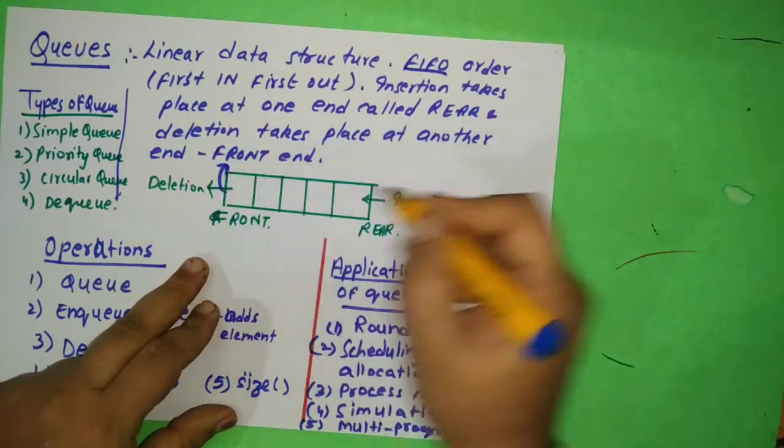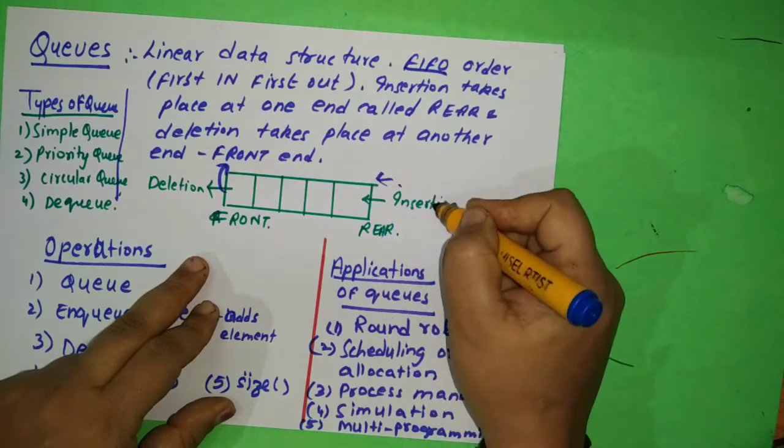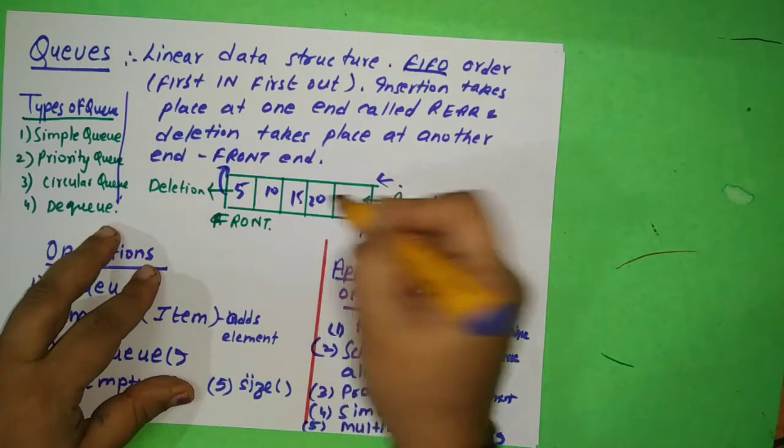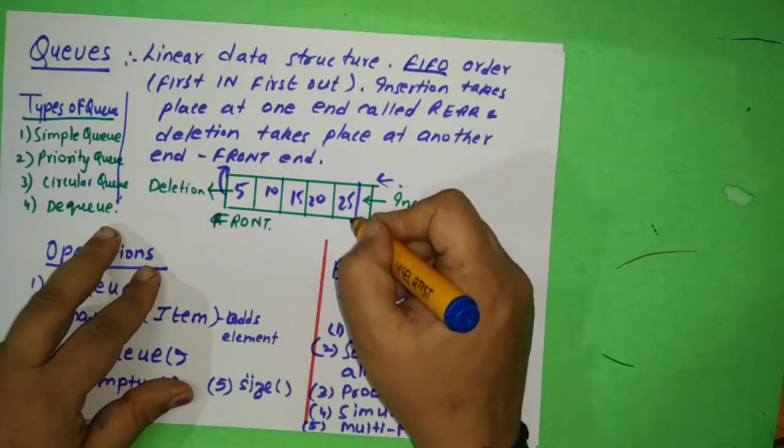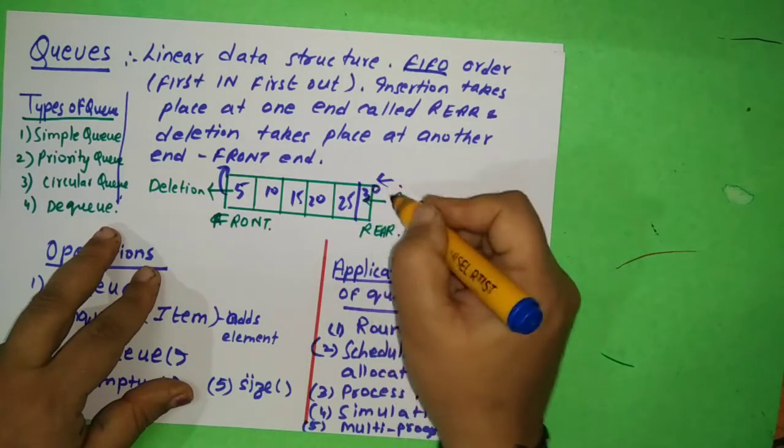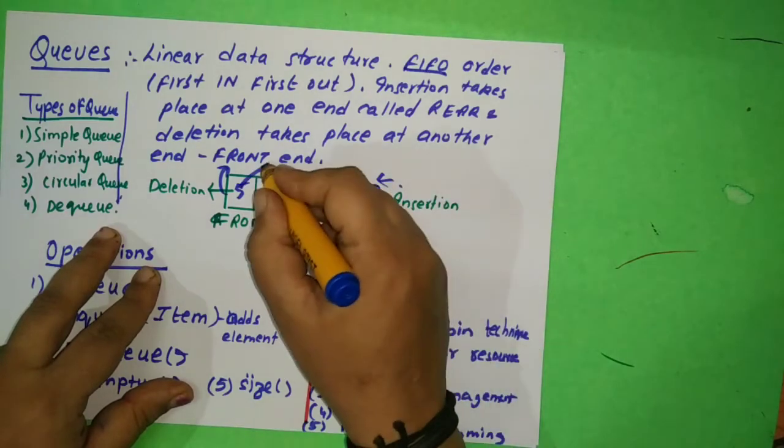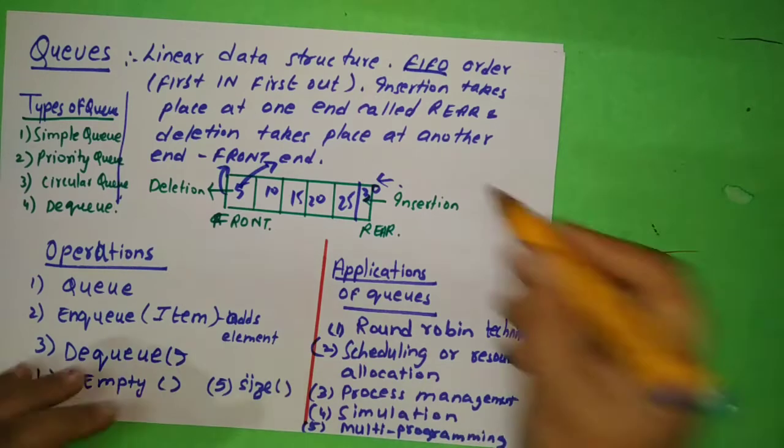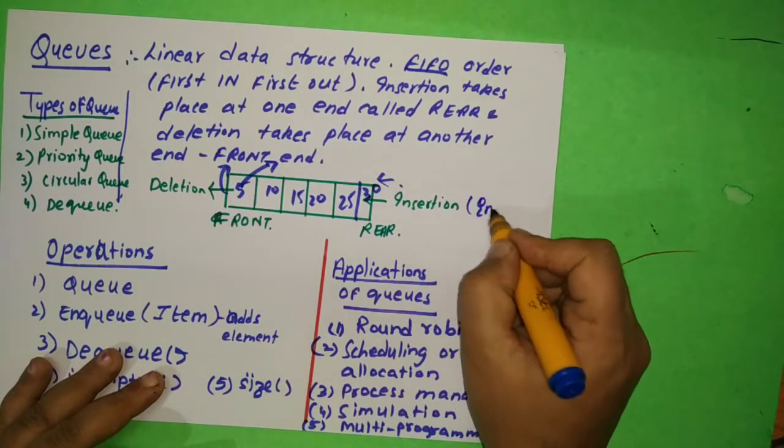So this is deletion and this side insertion happens. If I'm having, for example, numbers like this: 5, 10, 15, 20, and 25. So insertion - if I want to put a newer number, it comes from here. This will be moved out. That is called as deletion. So insertion, that operation is called as enqueue. This is known as enqueue, this is known as dequeue. This is clear?